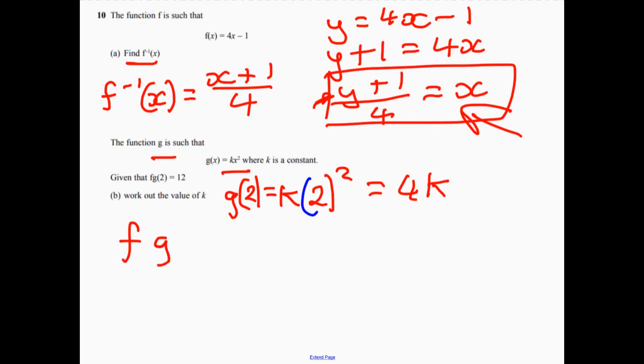So f of g of 2, we know this bit, that's 4k. So actually, we're going to do this. We're going to replace g of 2 with 4k.